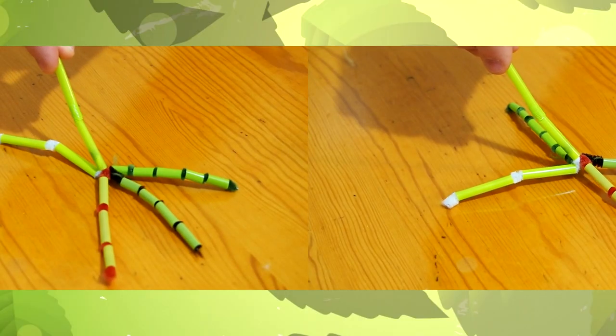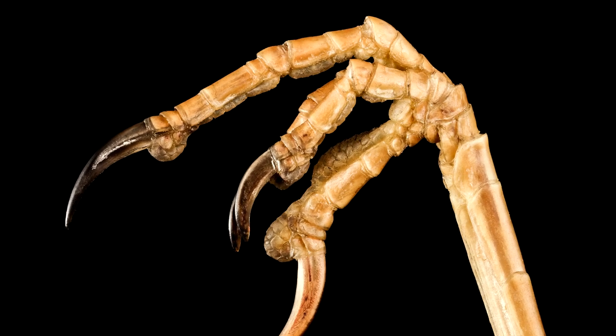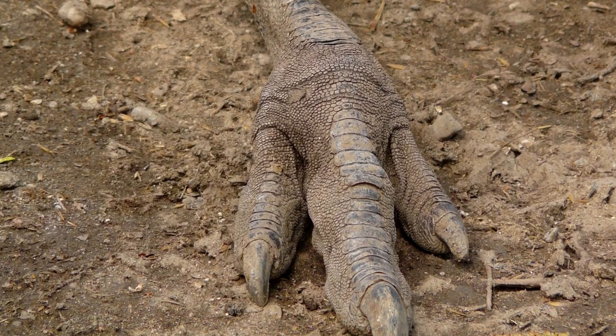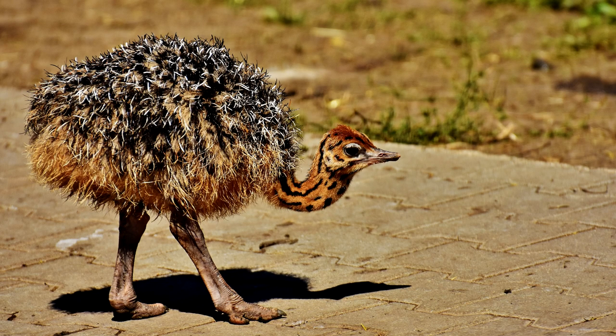These are the two biggest categories, but when you're talking about living things, there's always interesting exceptions. Emus only have three toes. The first toe is gone. Ostriches only have two toes. The first and second toe are gone.